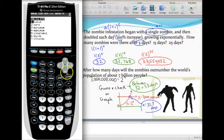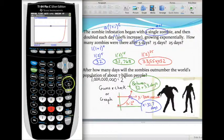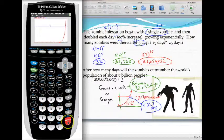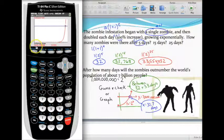Let's hit 2nd, trace, remember, to find the intersect button. So, then option 5. And I want to just trace over close to it. Or since there's only one intersection point, I should be able to just from here press enter three times. So, 1, 2, 3, and there it is. Like we said, between day 32 and 33 is when it happens. And specifically, we're coming up with about 32.7 days until humanity is doomed.